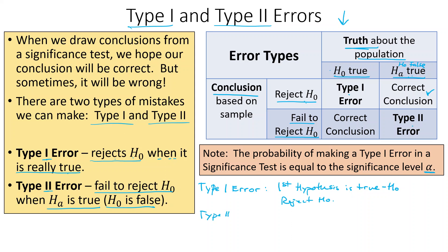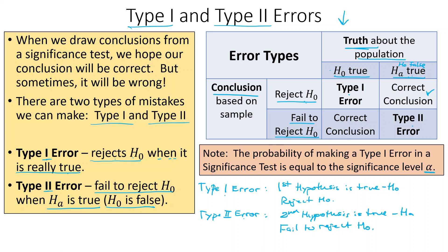For the Type 2 error, the way I remember it is that the second hypothesis is true — in other words, the alternative hypothesis is true — and then what would be a mistake, what we'd be doing wrong for that error, would be failing to reject the null hypothesis. So: if the first hypothesis is true and we do the wrong thing by rejecting it, it's a Type 1 error. If the second hypothesis — the alternative — is true, and we fail to reject the null hypothesis, that's making a Type 2 error.